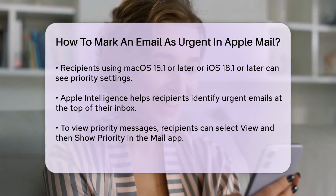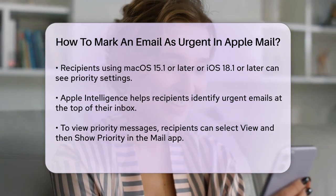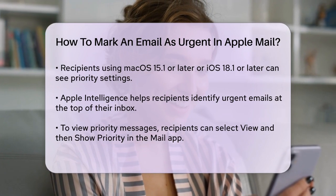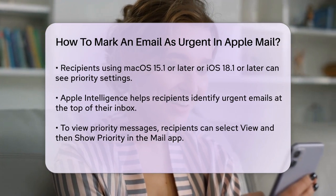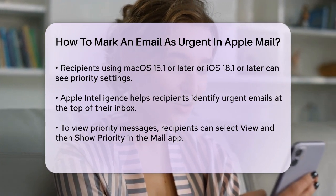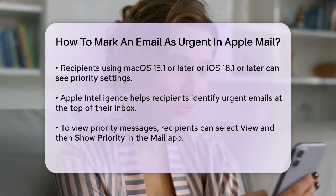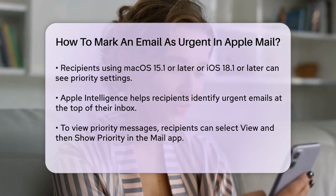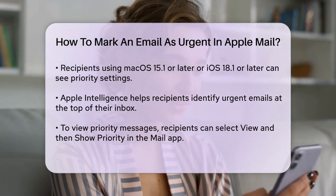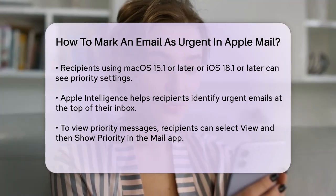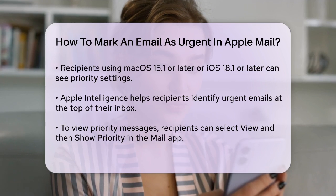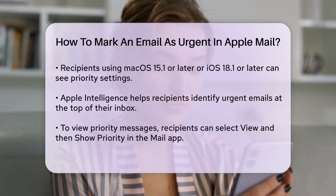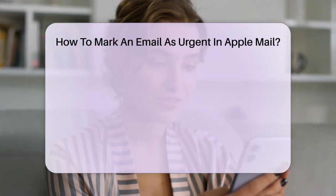They can use Apple Intelligence to view priority messages at the top of their inbox. To view these priority messages, the recipient would go to the Mail app, click their inbox, then select View in the menu bar, and click Show Priority. On an iPhone, they would tap their inbox, tap the three horizontal lines, and then tap Show Priority.